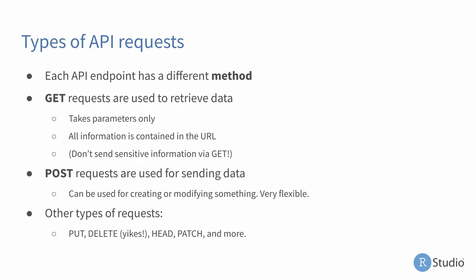The next type of request is called a post request. This is for sending data — in general, they should be used for modifying something or creating something. In my experience, post requests are gonna be the most flexible request types you're gonna see, and arguably the most common. There are other types of requests you might see: put, delete — I don't like deleting things, I don't trust myself — as well as head, patch, and other kinds.